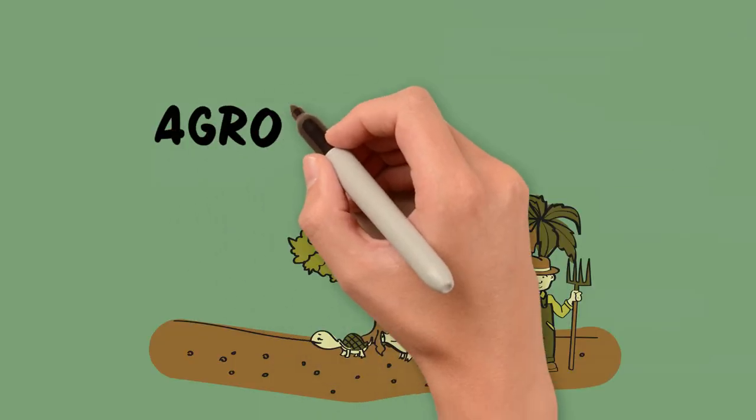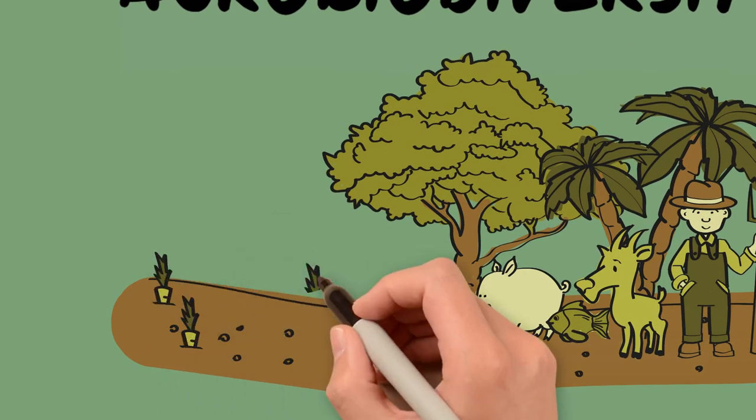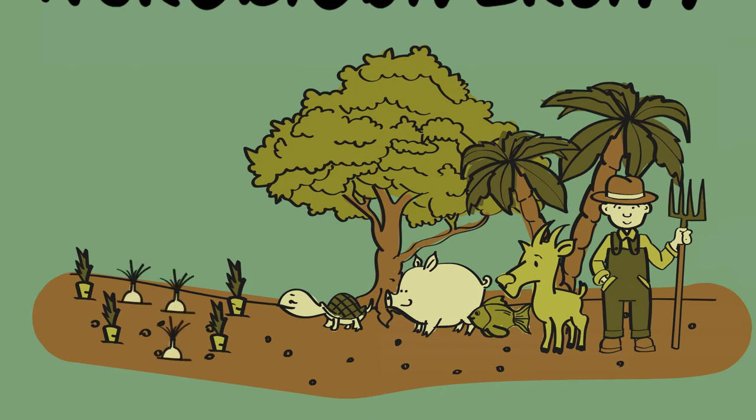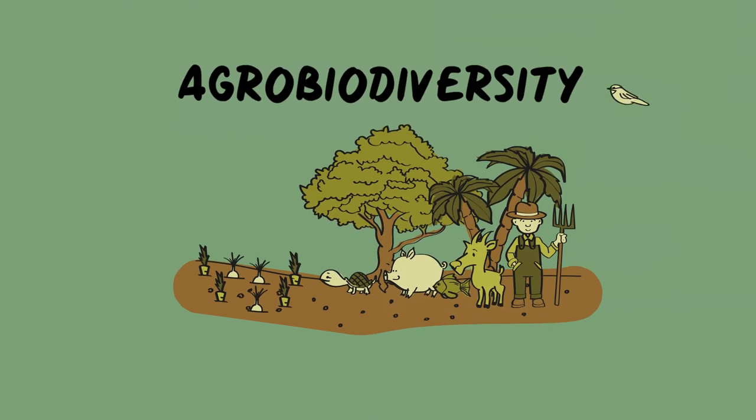Agrobiodiversity is the part of this diversity that has to do with agriculture, and therefore with the production of food and natural resources. It is composed of cultivated plants, trees, livestock, and wildlife that directly provide food or raw materials.